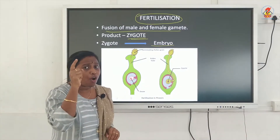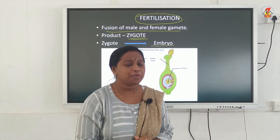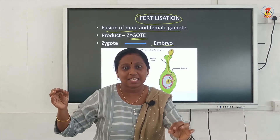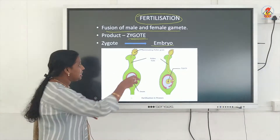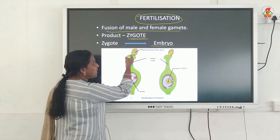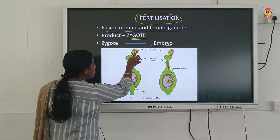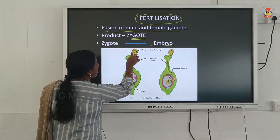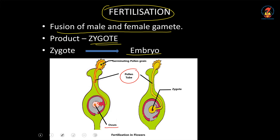Now this is the diagram of fertilization. The pollen grains are coming and falling on the stigma — what do you call this process? You call the process of transfer of a pollen grain from the anther to the stigma as pollination. So after pollination, the pollen grain will land on the stigma. Once the pollen grain lands on the stigma, it will slowly germinate — a small tube will come out of the pollen grain. This tube will grow towards the female gamete, as you can see in the next diagram.